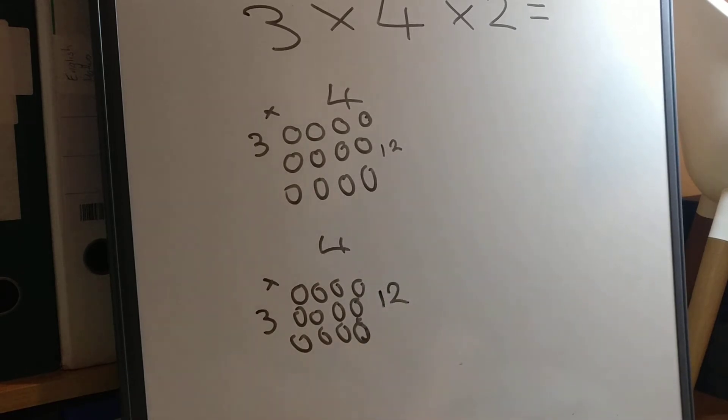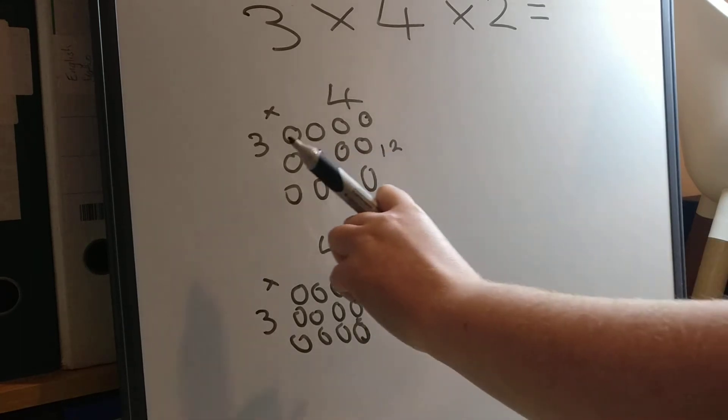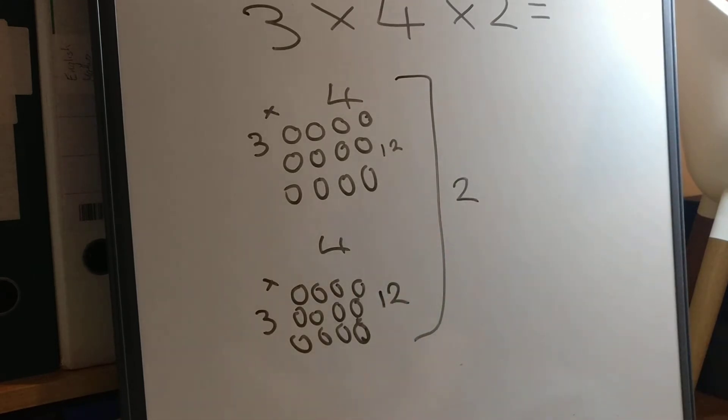3 times 4. So this one's 12. If you want to count it to check, that's okay. We've got four, eight, twelve. So now we have 3 times 4. We've got 3 times 4, two times.